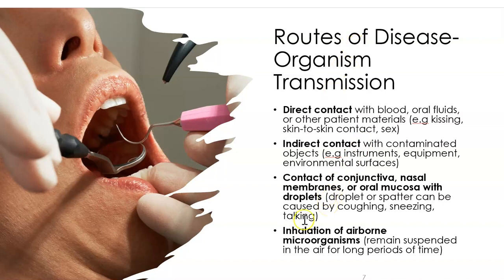You can also get sick through droplets or spatters. If someone sneezes or coughs, droplets spread and you could breathe them in, rub your eyes and get an eye infection, or they could enter your mouth. Infection can also be airborne — several diseases are airborne, including COVID, TB, measles, and mumps, where tiny particles are suspended in the air and you breathe them in.